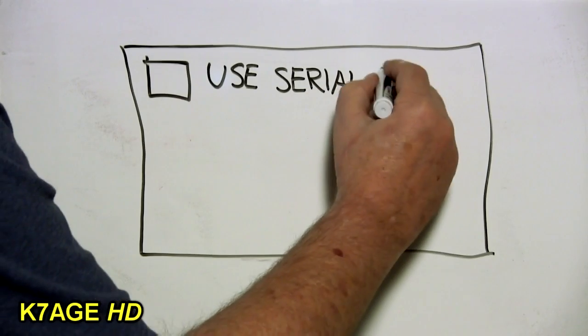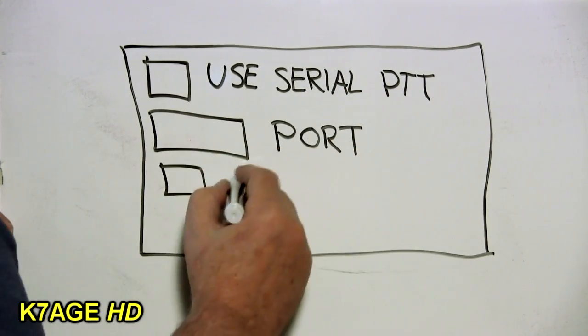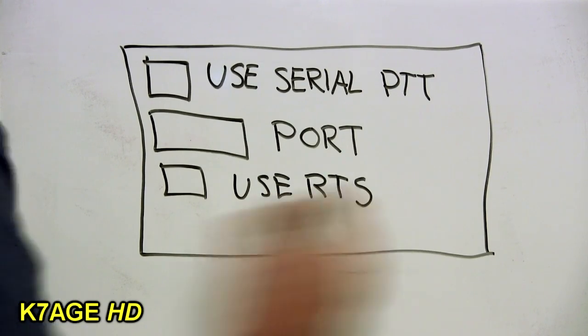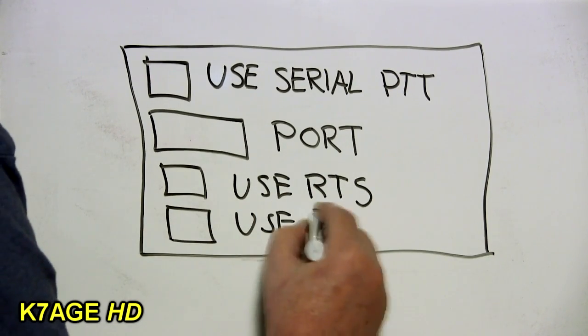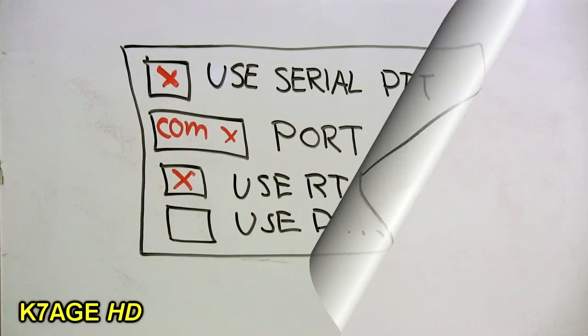When using the serial port to generate your push to talk you typically have to go into the configuration setup in your software for your digital program and tell it to use the serial port for push to talk. Choose the COM port that you're using and then select either RTS or DTR.